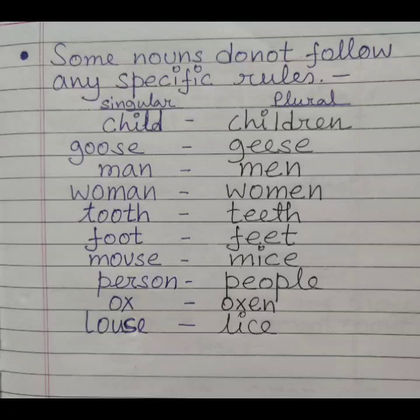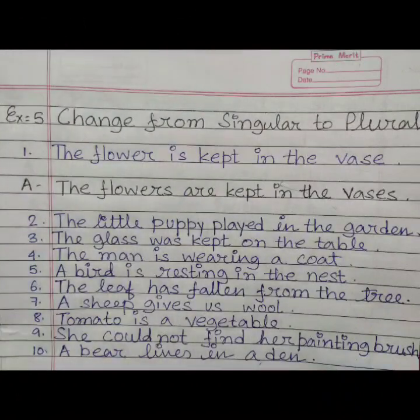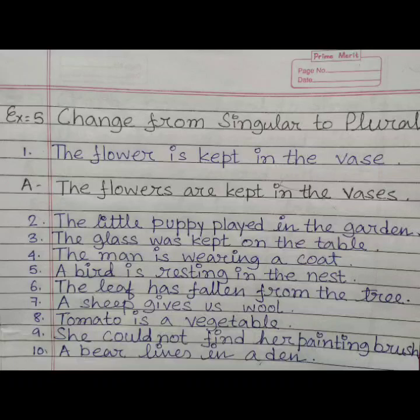Students, now we shall solve the exercises. Exercise number 5: Change from singular to plural. Number 1: 'The flower is kept in the vase.' The answer is: 'The flowers are kept in the vases.' The rest of the exercise I shall read out for you. 2. The lady puppy played in the garden. 3. The glass was kept on the table.